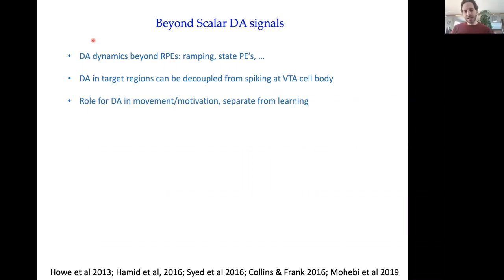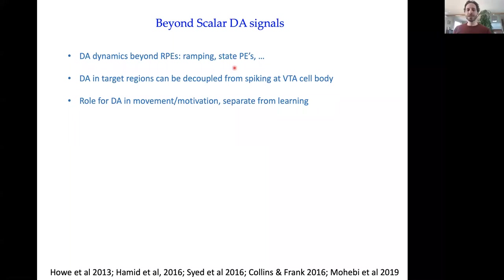At the end I'll touch on ramping in dopamine neurons. Sometimes people talk about prediction errors in the state; Raphael just talked about prediction errors at the level of actions. Data from Josh Burke's lab has suggested that dopamine in target regions like the striatum can sometimes even be decoupled from the spiking of dopamine neurons in the midbrain ventral tegmental area — so there might be different signals conveyed by the cell body and locally manipulated in the target. There's also a role of dopamine in movement and motivation, which is thought to be actually separate from learning.